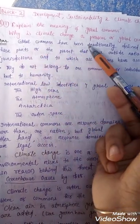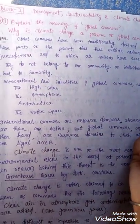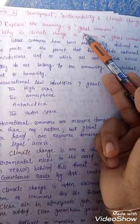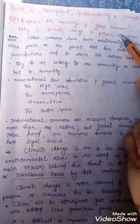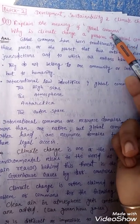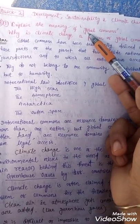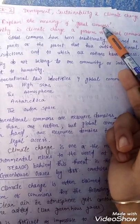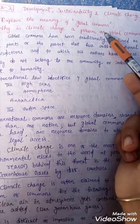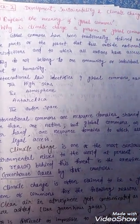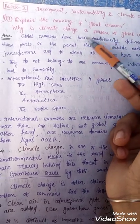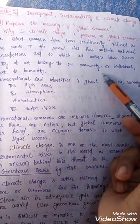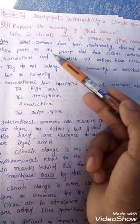First you need to understand what 'common' means and what 'global common' means. A 'common' is something to which everyone has a right. A global common means something that is not limited to a small area - it may be as small as a village pond or as big as global commons. Global commons are those resources that do not belong to one community or one individual but to humanity.